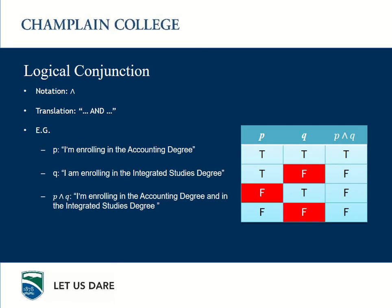We also have the logical conjunction. The notation is an upside-down V and we read it as AND. For instance, 'I'm enrolling in the Accounting degree and in the Integrated Studies degree.' This is only TRUE if both situations are true. If one of them is FALSE, or if both are FALSE, I'm lying. So the conjunction — AND — is FALSE if at least one of them is FALSE. That's what you have in the truth table on screen. You can pause the video at any time to spend as much time as you need looking at the truth tables.